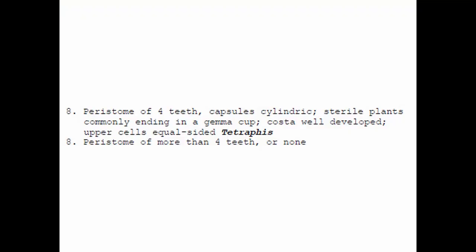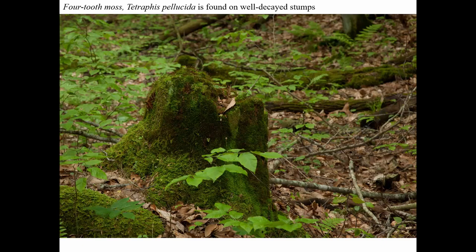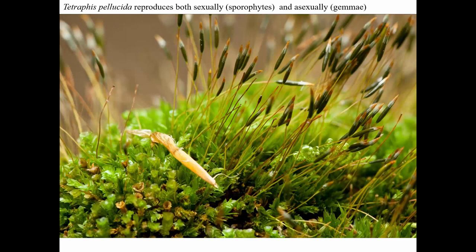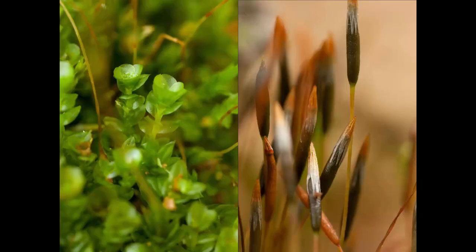Another unusual moss is tetraphis, which is in a different sub-order and grows typically on very decayed wood, and also on sandstone. It has four peristome teeth — visible in the capsule at the left where you can see the four teeth, while the other capsules still have the calyptra and operculum on them. Another distinctive thing about tetraphis is that it reproduces asexually by production of gemmae in little cups at the tips of the gametophyte stems that look like little birds' nests.